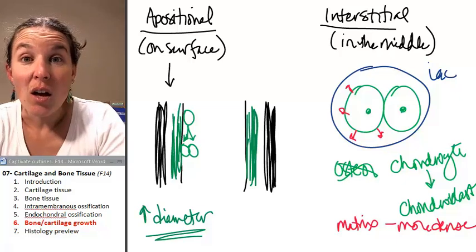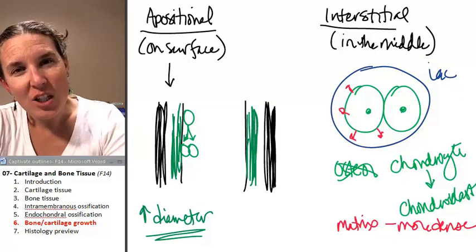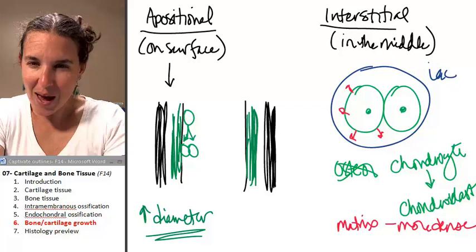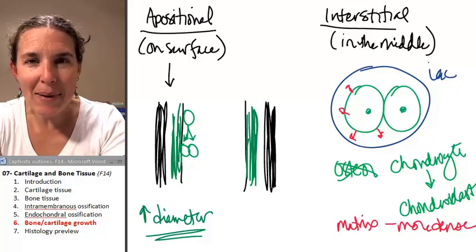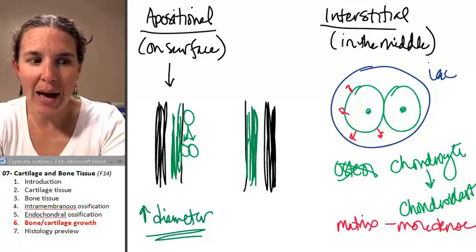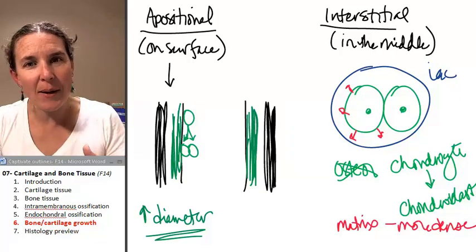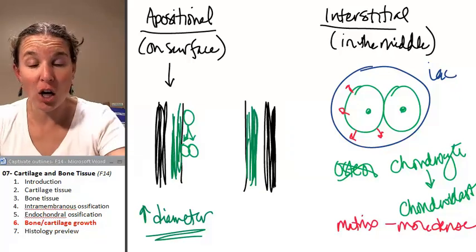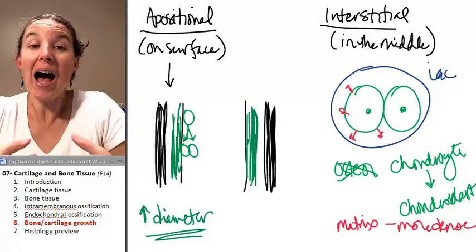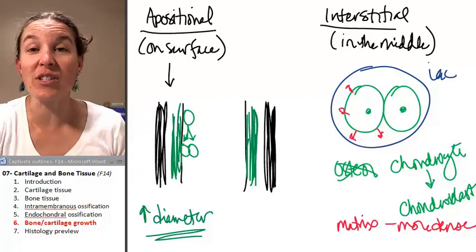Interstitial growth in compact bone. Can you visualize? Would interstitial growth happen? You can't make bone tissue compacter. You can't squish it more. It's already solid. However, thank you very much, I would like to say interstitial growth does not happen in bone.